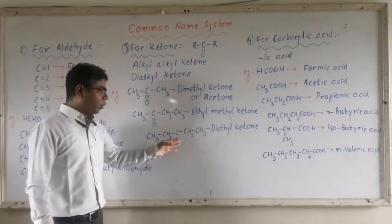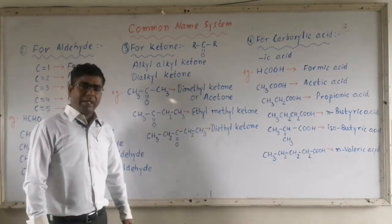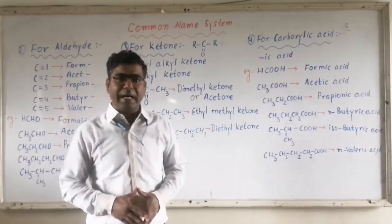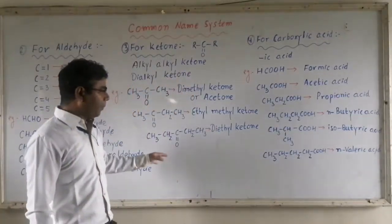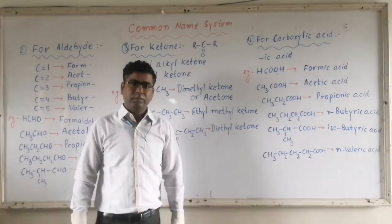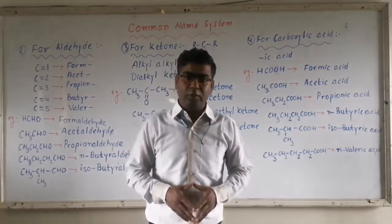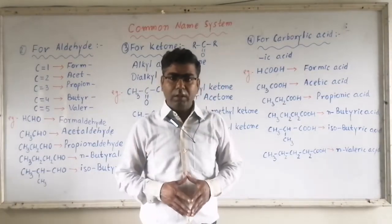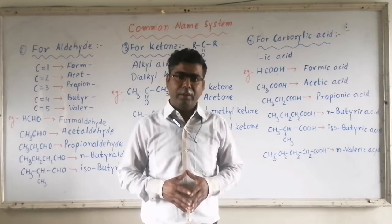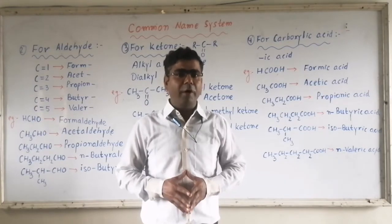CH3CH2-CO-CH2CH3: on both sides we have the same alkyl group, and here the alkyl group is ethyl. So this compound will be named 'diethyl ketone.' Similarly, you can apply the rules I have told you — when to use 'normal,' when to use 'iso,' etc. So that is about the common name of ketone.